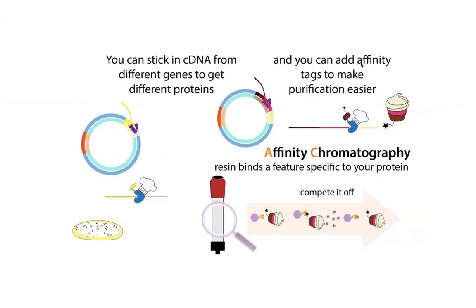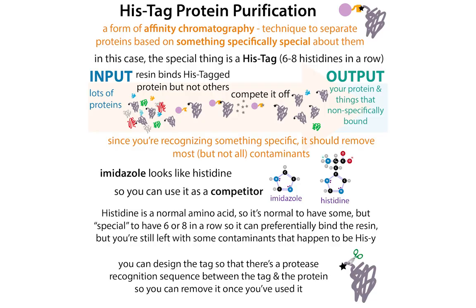It might not even be just the cDNA for our protein, because we're controlling what we put in the bacteria. Often what we do is stick a little extra sequence on the ends. What we can do is add a histidine tag. We add the codon — the RNA letter code — that tells the ribosome to put a histidine, and we don't just put one of those codons, we put like six or eight of them. Then the ribosome is going to add those histidines to the end of our protein.